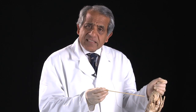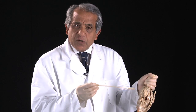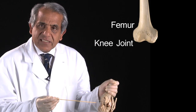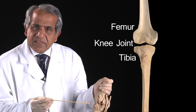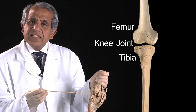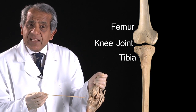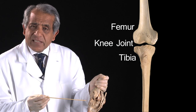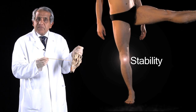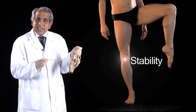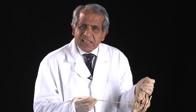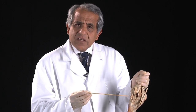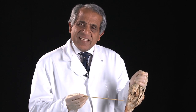Now you might expect this joint, with the two large femoral condyles resting on a relatively flat surface — the tibial plateau — you might expect this joint to be a relatively unstable joint. And yet it is a very, very stable joint. Dislocations of the knee joint are distinctly rare conditions. So what is it that accounts for the stability of the knee joint?